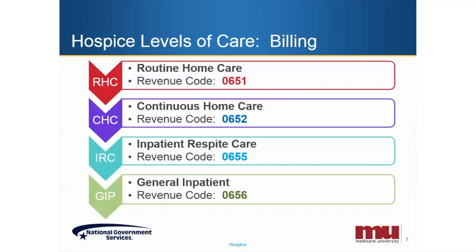When billing for a routine level of care for hospice, enter a revenue code of 0651. When billing for continuous home care, hospice providers would bill using revenue code 0652. Inpatient respite care is billed with revenue code 0655, and general inpatient care is billed with revenue code 0656.